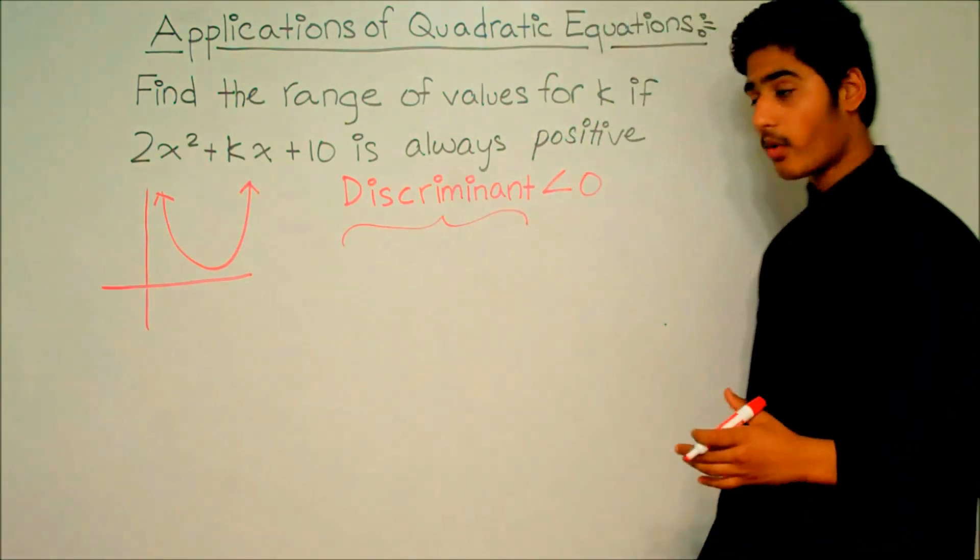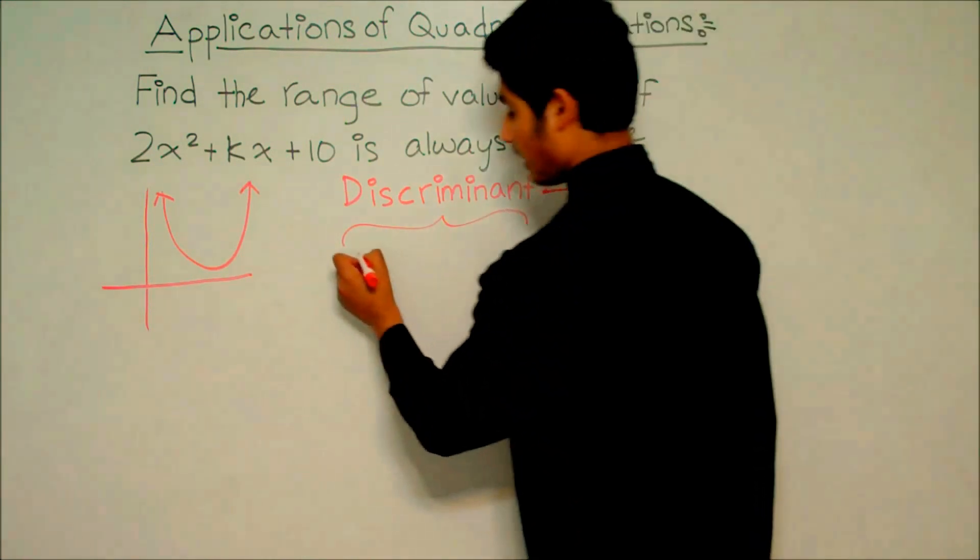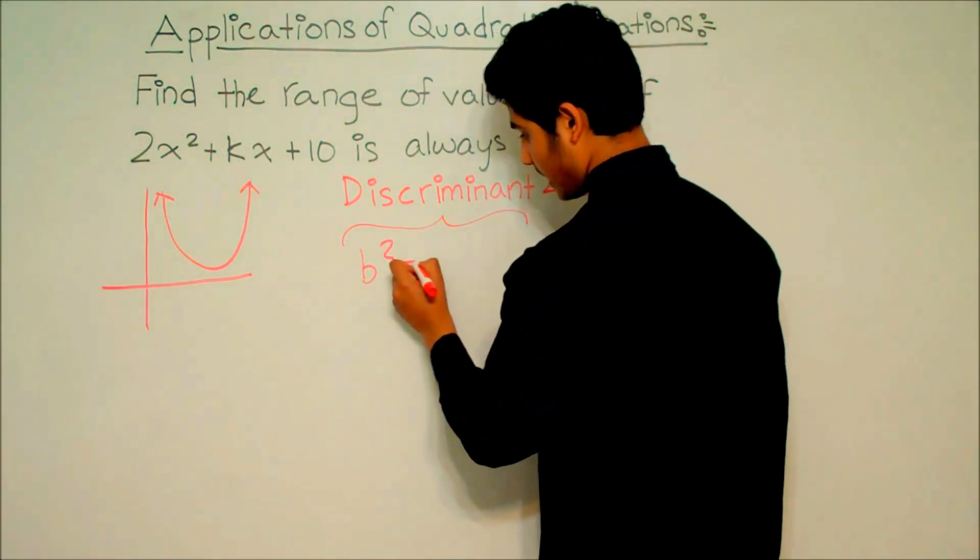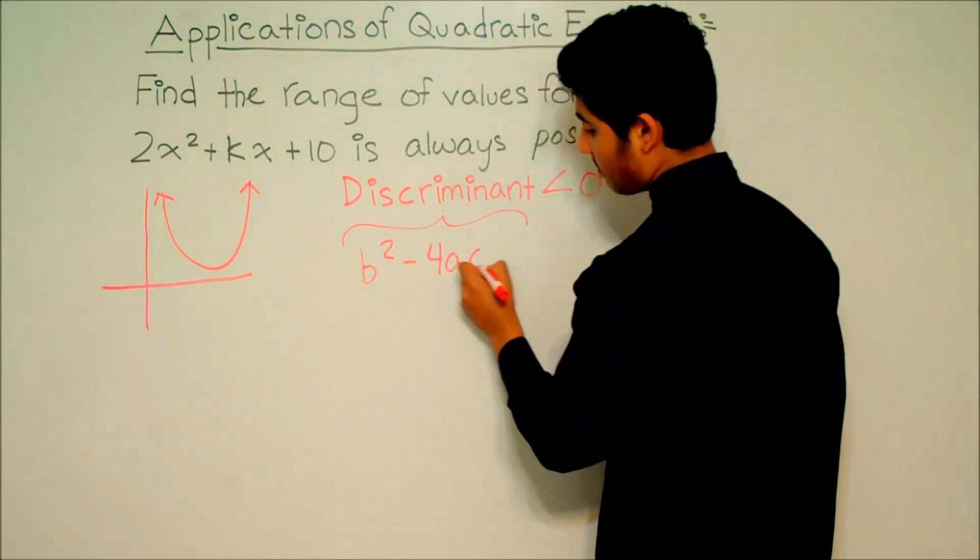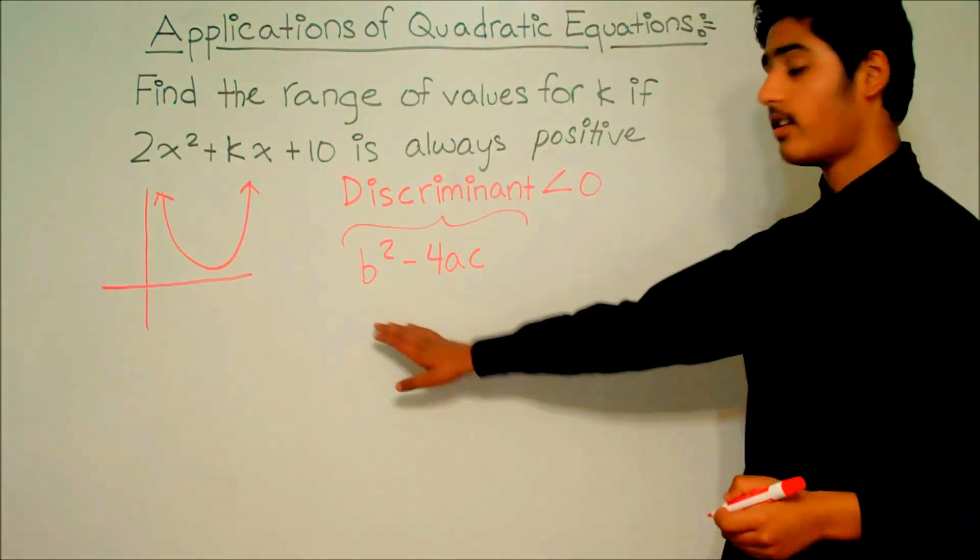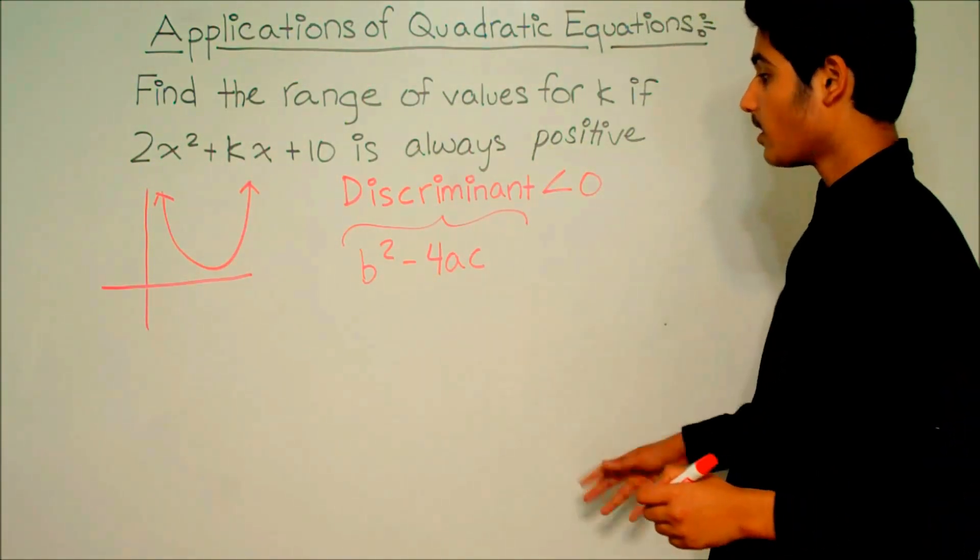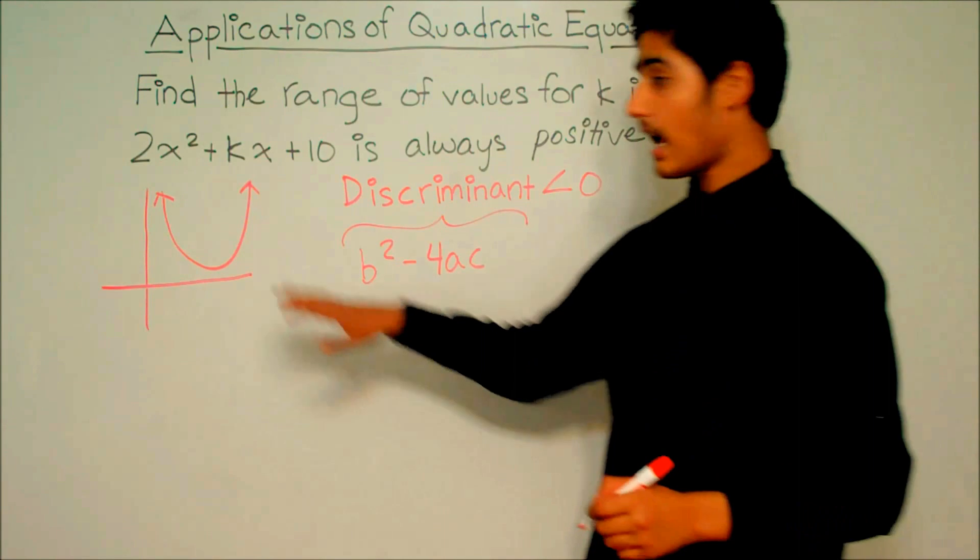The discriminant is the b² - 4ac part in the quadratic formula. So the discriminant is b² - 4ac. Now let's use this in our problem.